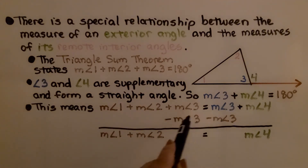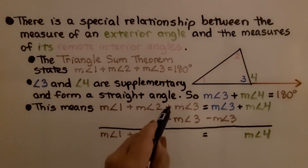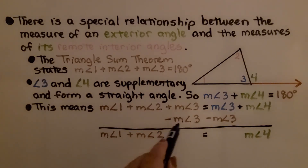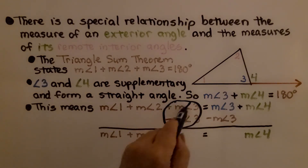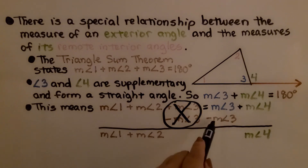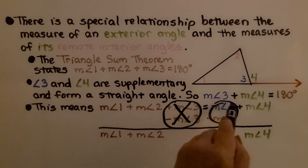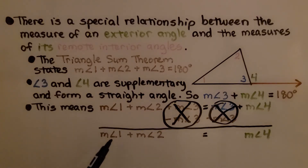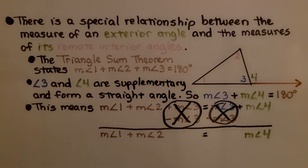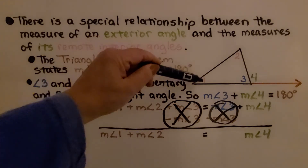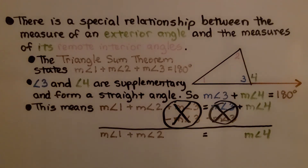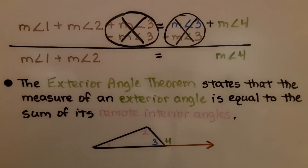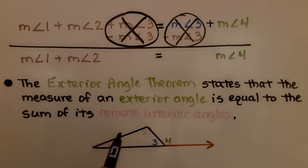We could subtract the measure of angle three from each side. The plus angle three and minus angle three create a zero pair and eliminate, leaving us with the measure of angle one plus the measure of angle two equals the measure of angle four. Whatever the measures of one and two are is equal to this exterior angle. The exterior angle theorem states that the measure of an exterior angle is equal to the sum of the remote interior angles.